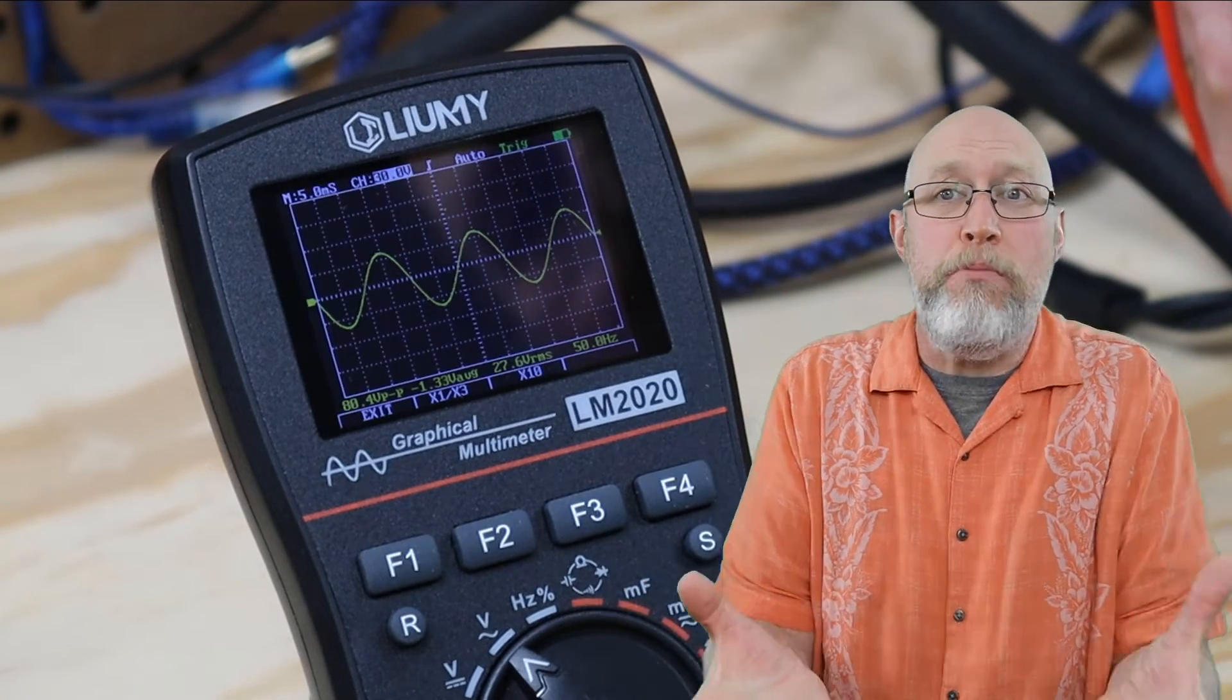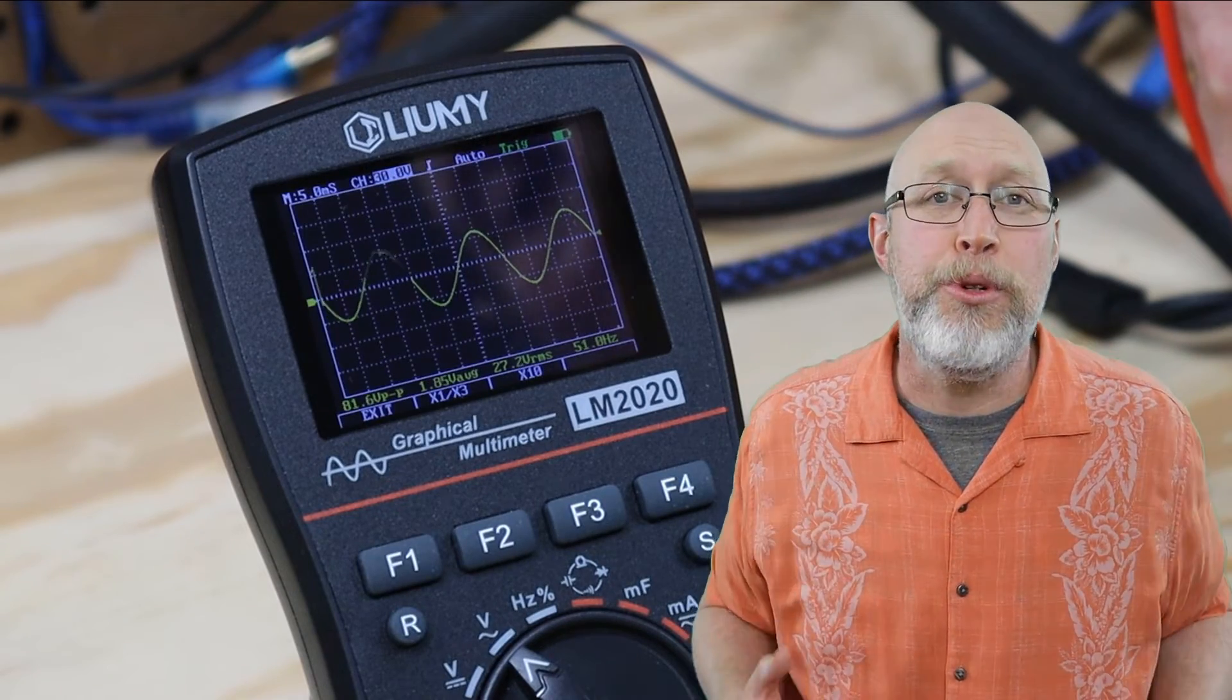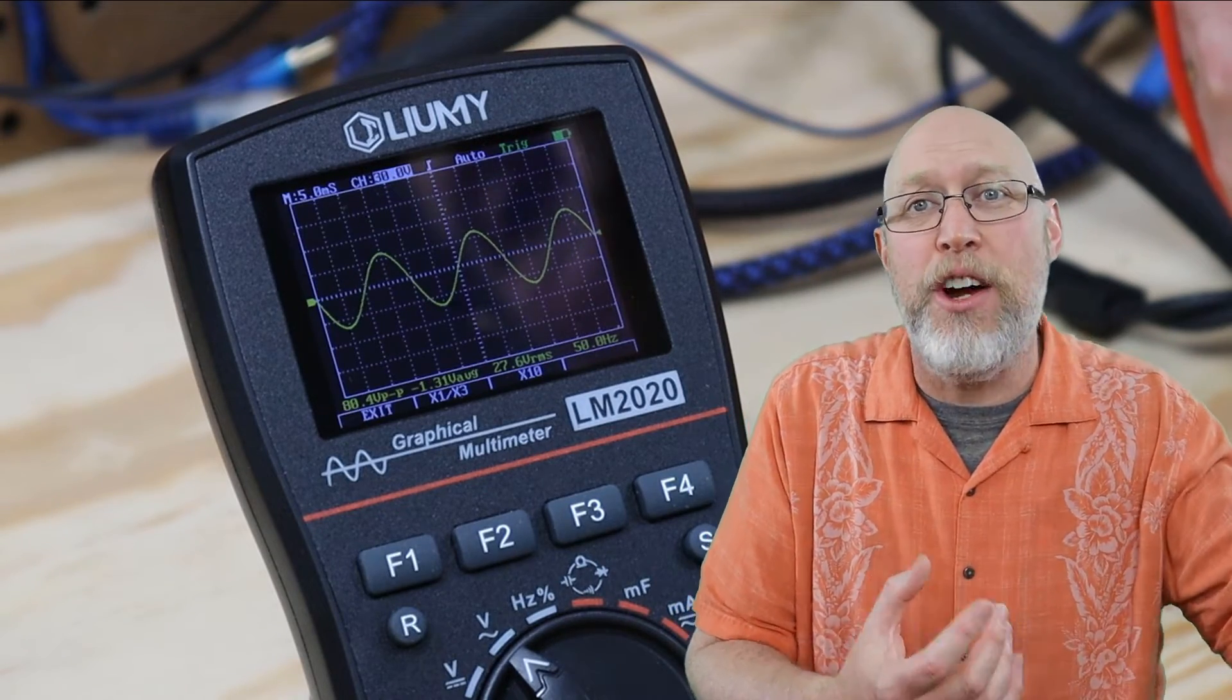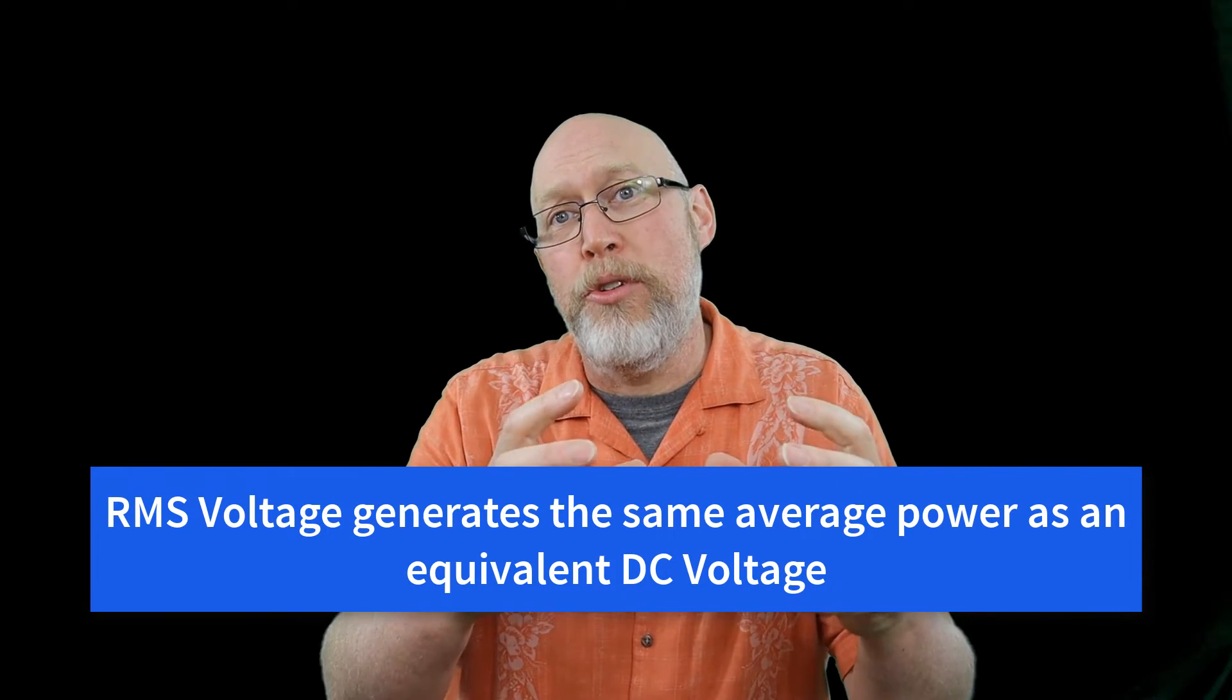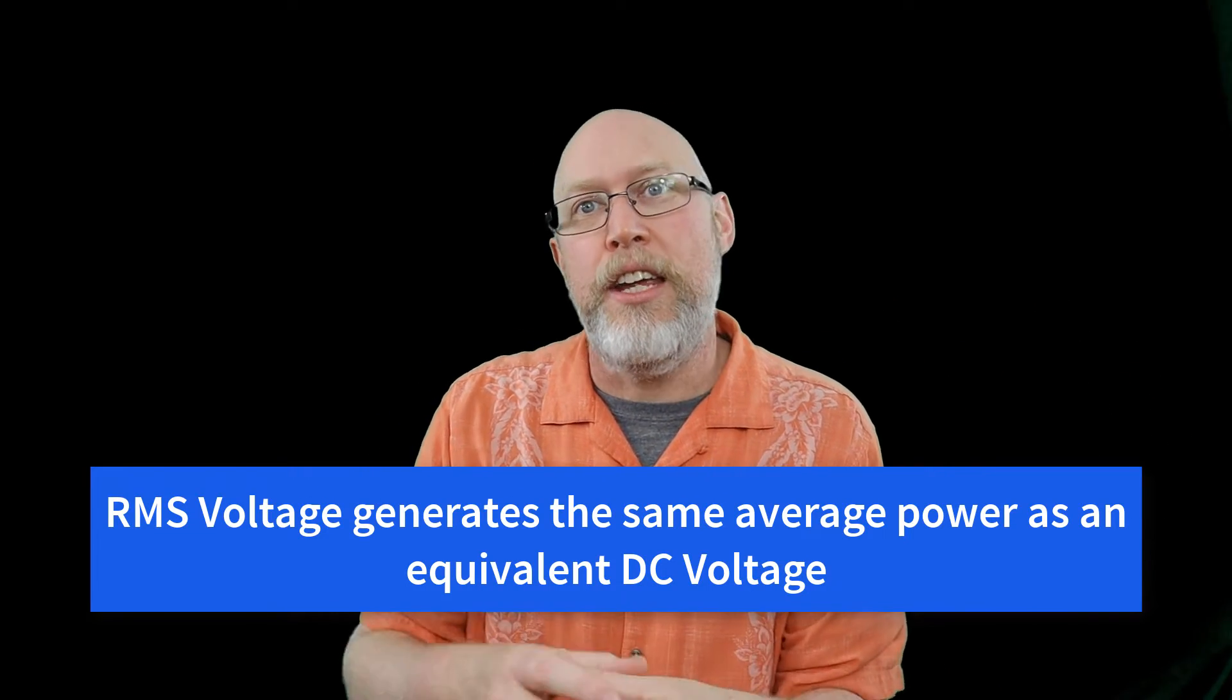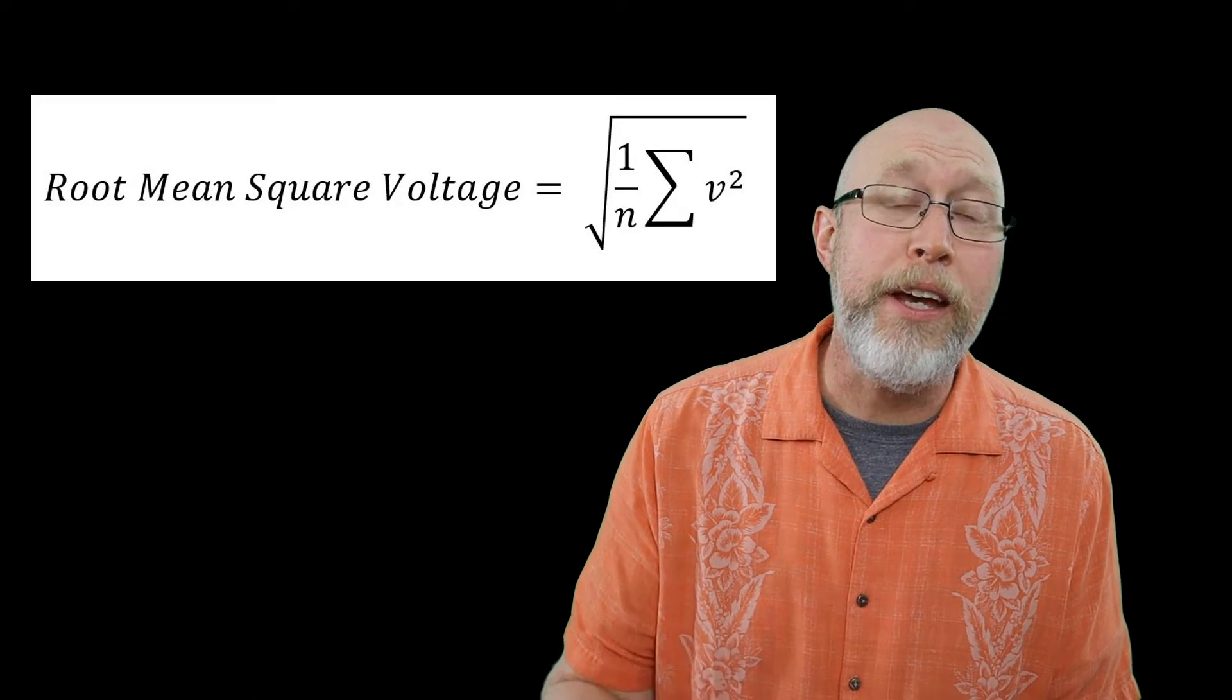RMS stands for root mean squared. It's just a little mathematical trick that you can use to calculate an average when you've got a bunch of positive and negative numbers that would offset each other. In fact you've probably heard of RMS power referred to as continuous power. Which if you think about it doesn't make any sense because AC power is not continuous. The way to think about it is RMS power is equal to the same amount of power you would get if you had continuous DC power. So here's the formula for calculating RMS voltage. It looks really complicated but it's not. I'm gonna break it down for you by giving you an example.